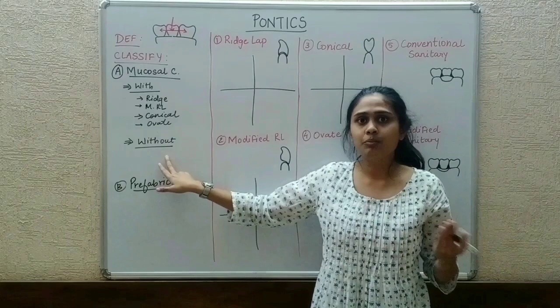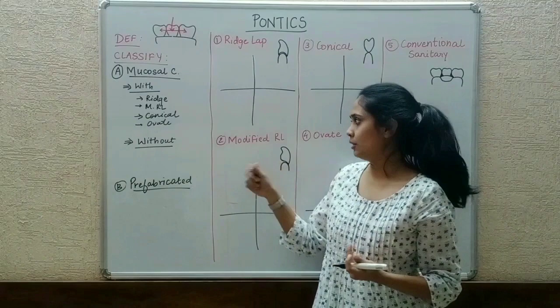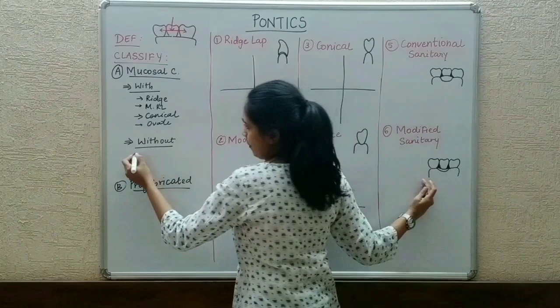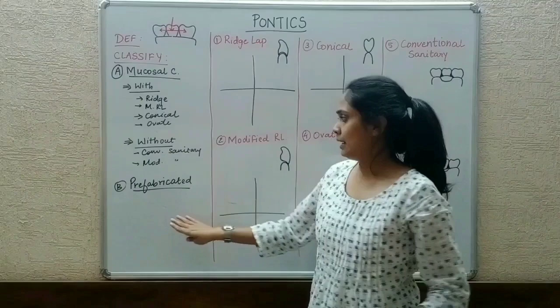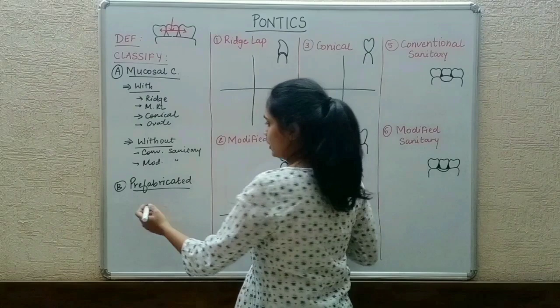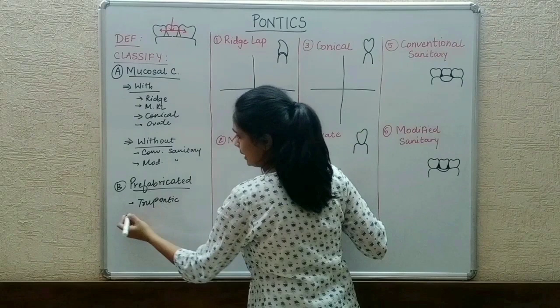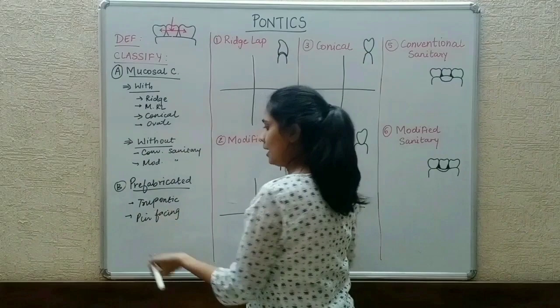Pontics without mucosal contact do not adhere to the tissue surface. In this category we have two types: conventional sanitary and modified sanitary. Lastly, we have prefabricated pontics. In this category we just need to remember a few examples: true pontic, pin facing (which has two types — reverse and modified), and porcelain fused to metal.